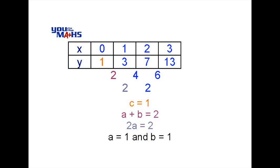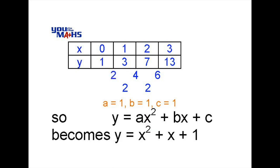So our general rule given that a, b and c in this case are all equal to 1 gives us an equation of y equals 1x squared plus 1x plus 1 or to make it simpler y equals x squared plus x plus 1.